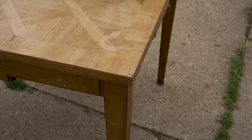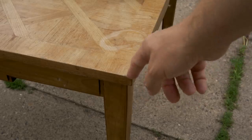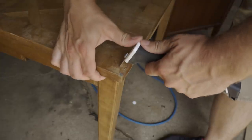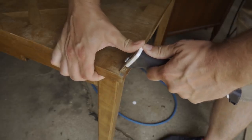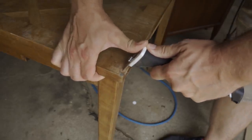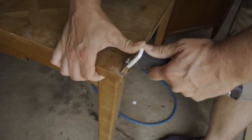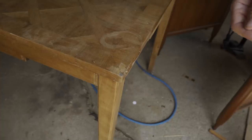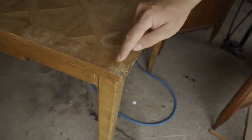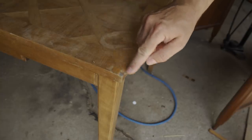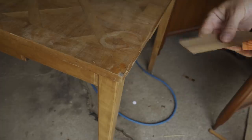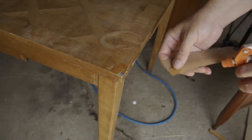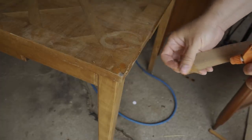I started by repairing this chip in the veneer. First I scraped away any finish that may have been left on the veneer around the repair area, and then put some water on it. This would show me what the color would look like when I got some clear finish onto the wood. This is the color that I wanted to try to match with the new piece of veneer.